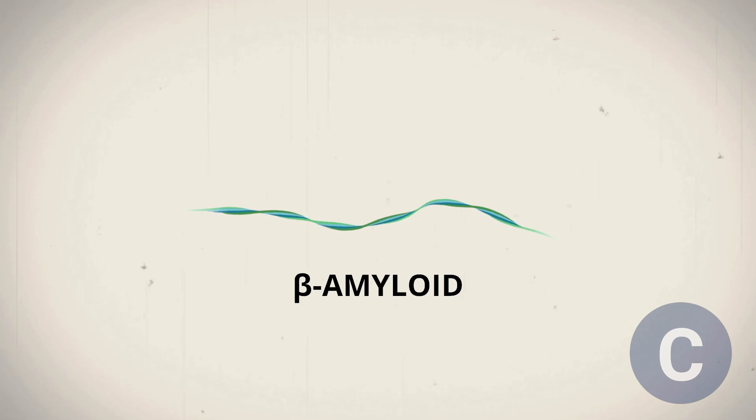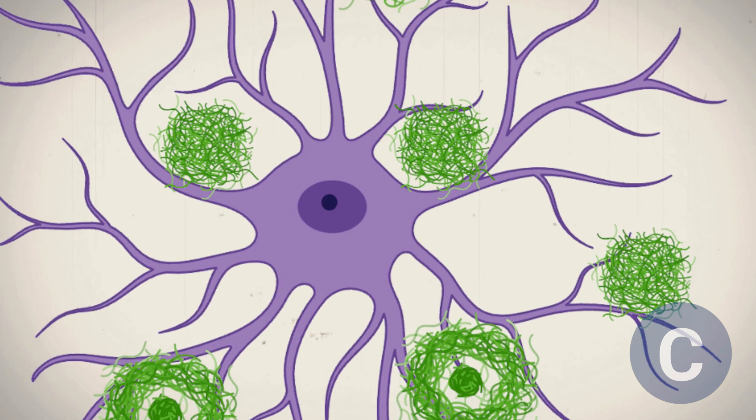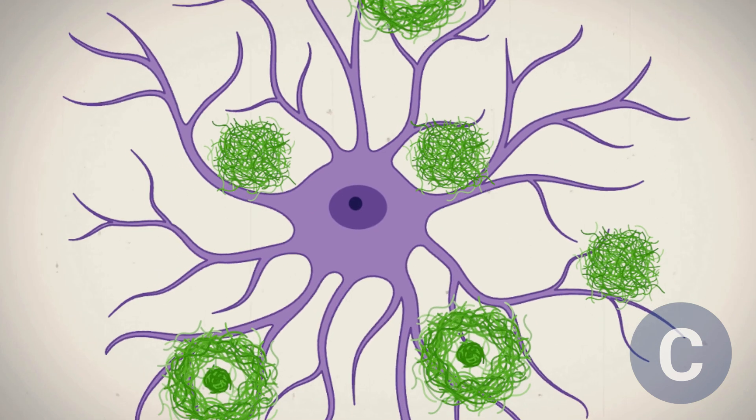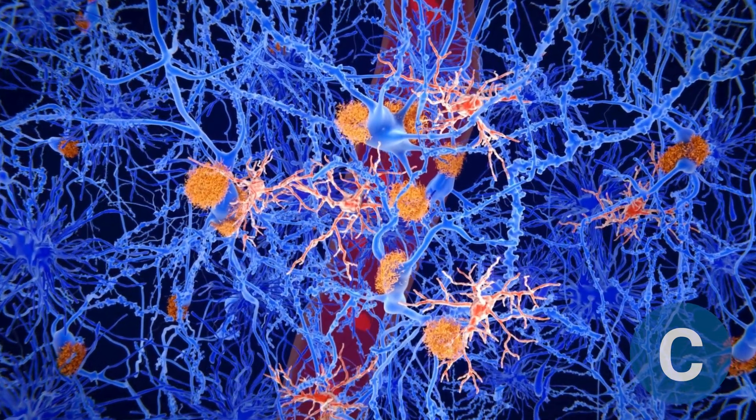Among these waste products is beta-amyloid, a peptide that, if not effectively cleared, tends to accumulate. Over time, this buildup can lead to the formation of plaques, which are characteristic of Alzheimer's disease.